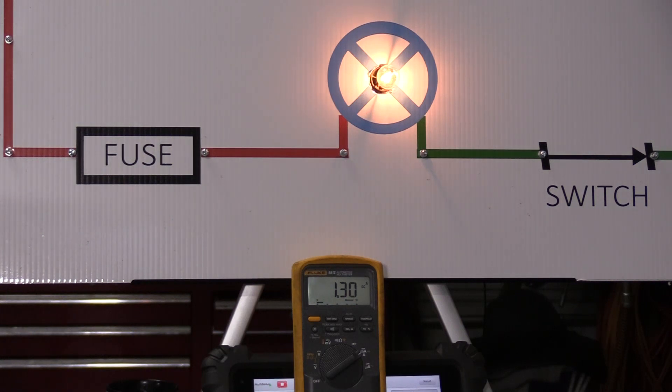But what if we introduce a source of resistance that isn't supposed to be there? That extra resistance is going to reduce current flow throughout the entire circuit with obvious results.